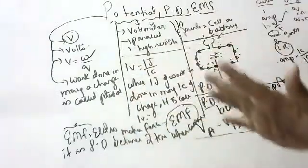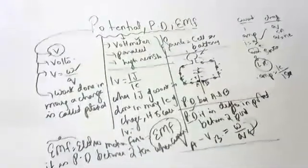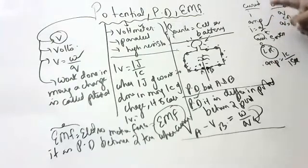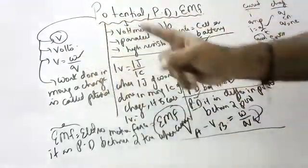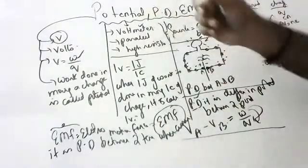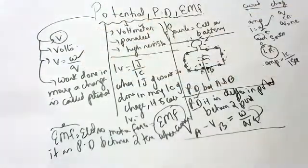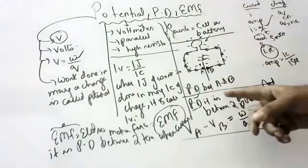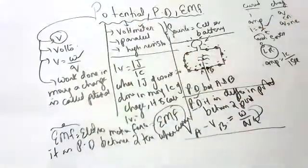Full summary: Charge denoted by Q, units Coulombs, formula Q = ne. Current denoted by I, units Amperes, formula I = Q/T, measured by ammeter connected in series because low resistance. One Ampere = one Coulomb per second. Potential denoted by V, units Volts, formula V = W/Q, work done in moving the charge is potential, measured by voltmeter connected in parallel because high resistance. One Volt: one Joule of work in moving one Coulomb. Source: cell or battery. Potential difference when current is not flowing is called EMF — electromotive force.